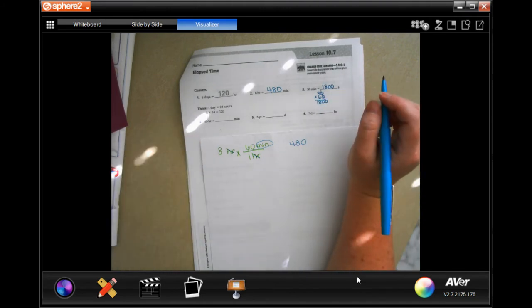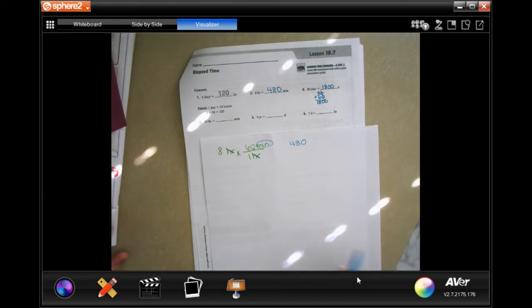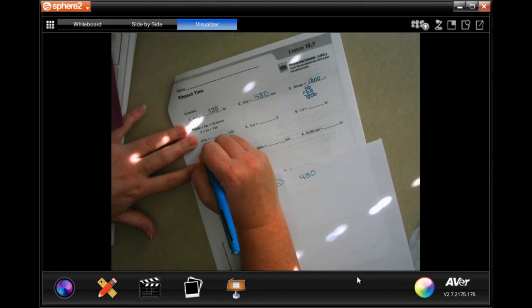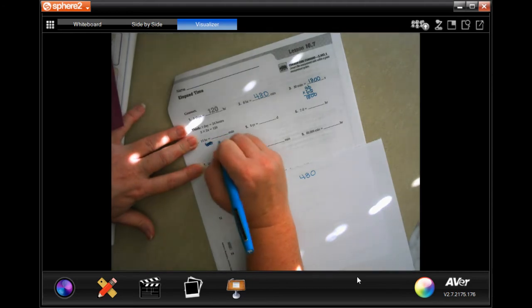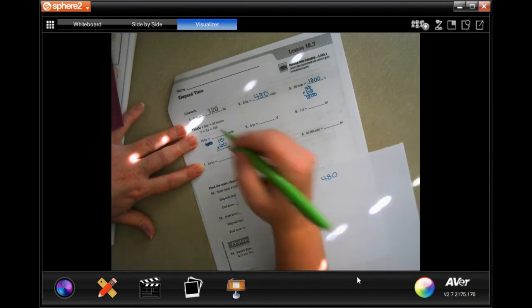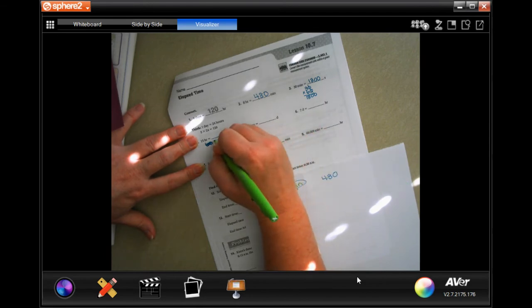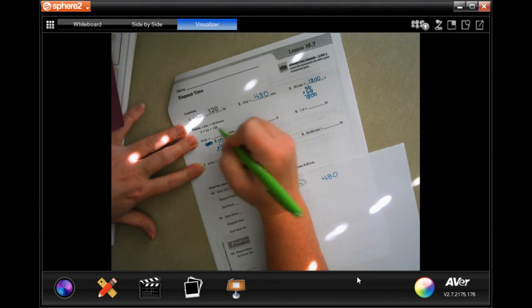15 hours is how many minutes? Well there's 60 minutes in each hour. I'm going to take that zero and put it on the end. 6 times 5 is 30, carry the 3. 6 times 1 is 6 plus 3 is 9 - 900 minutes.